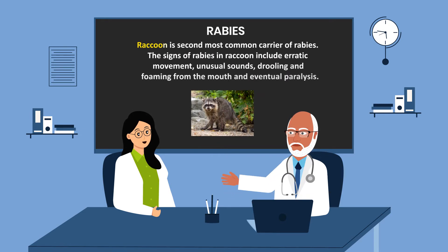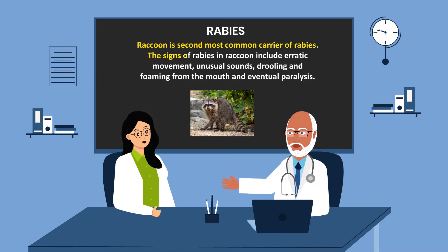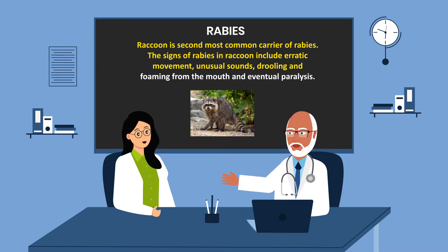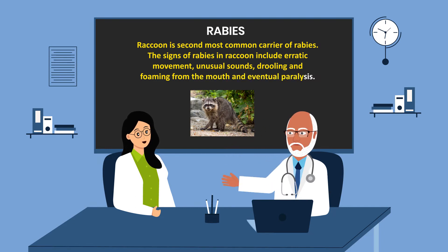Raccoons are the second most common carrier of rabies. The signs of rabies in raccoons include erratic movement, unusual sounds, drooling and foaming from the mouth, and eventual paralysis.